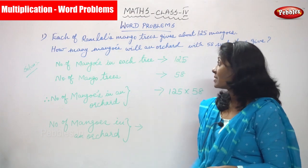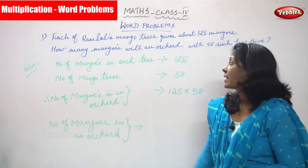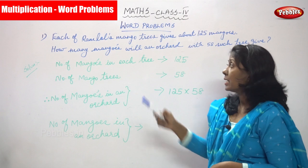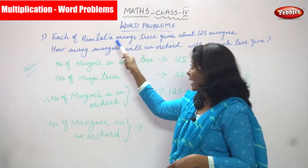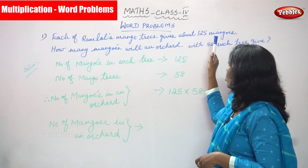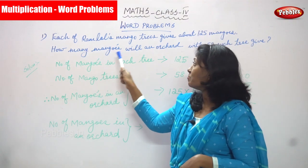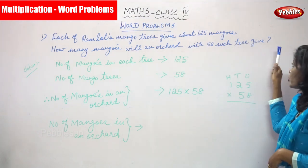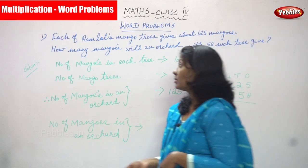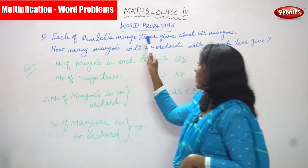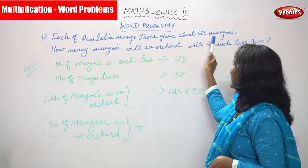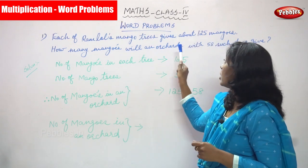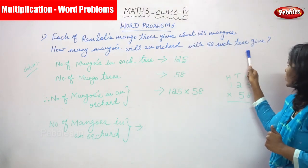Now we are going to see word problems. The question is: each of Ramlal's mango trees gives about 125 mangoes. How many mangoes will an orchard with 58 such trees give?